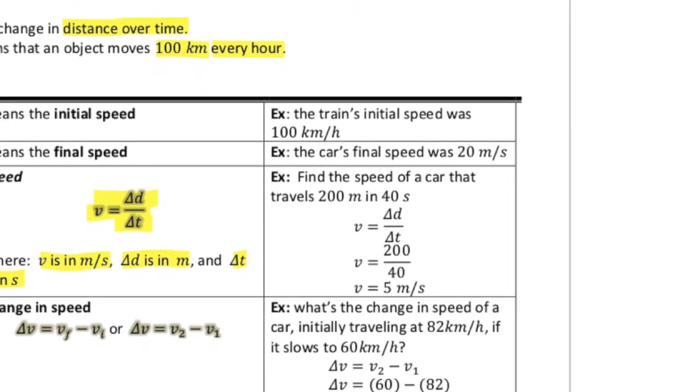So let's take a look at some examples. So the train's initial speed was 100 kilometers per hour. Example two, the final speed was 20 meters per second. But here's the big one. Find the speed of a car that travels 200 meters in 40 seconds.